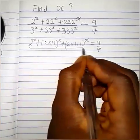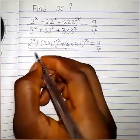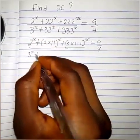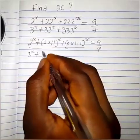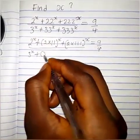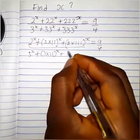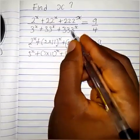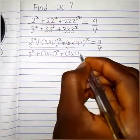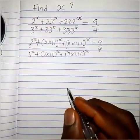For the denominator, everything over 3 raised to the power x: 33 can be written as (3 times 11) raised to the power x, and 333 can also be written as (3 times 111) raised to the power x.